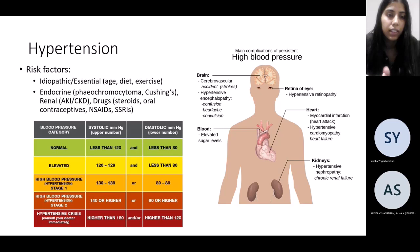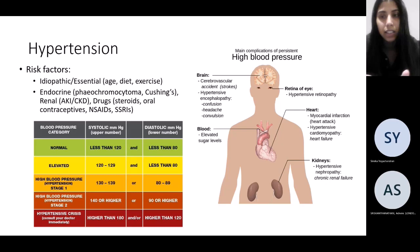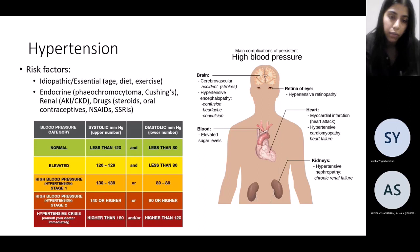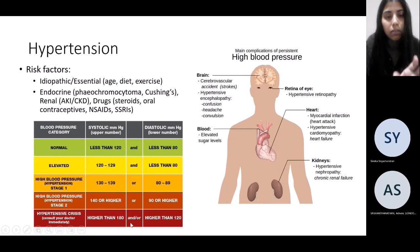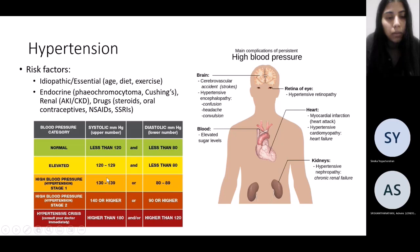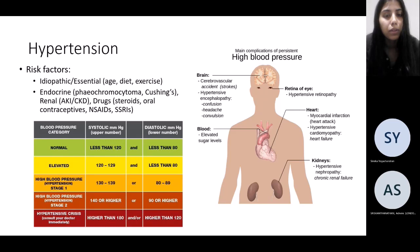Hypertension is an important topic — worth revising in detail for finals. Blood pressure on an average normal spectrum is around 120/80. Stage one is 130 to 139 systolic, stage two is 140 and above, and a hypertensive crisis is anything above 180 systolic. For exam purposes, focus on systolic blood pressure numbers. Causes: essential hypertension is when no secondary cause has been found. Secondary causes include pheochromocytoma, Cushing's disease, steroid use, CKD, and the oral contraceptive pill.